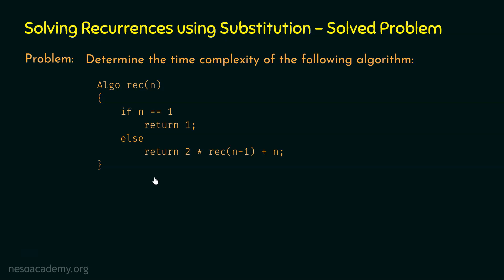In order to find the time complexity of the recursive algorithm, we need to write the recurrence relation of that algorithm first. Then we can solve that recurrence relation using the substitution method. There are many methods to solve recurrence relations, and we will learn those as we proceed. But right now, we are familiar with the substitution method, so let's write the recurrence relation of time of this algorithm.